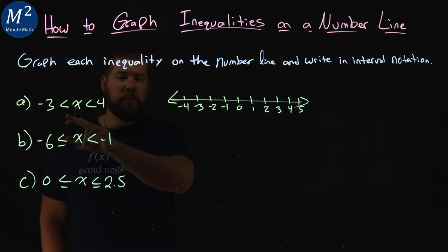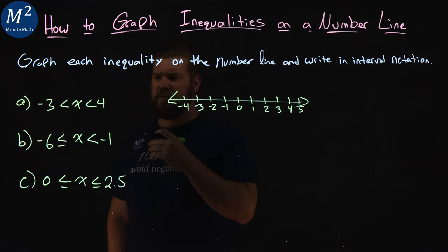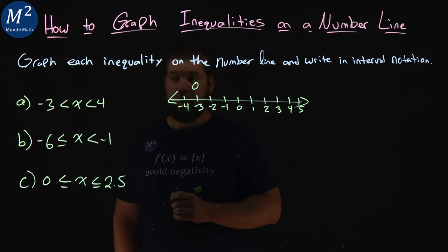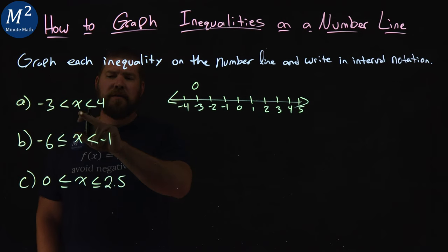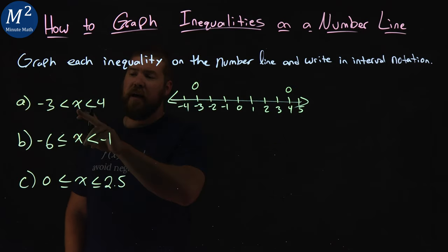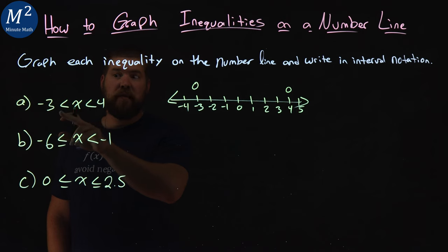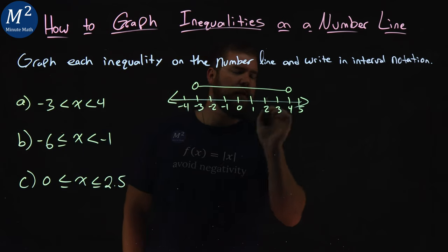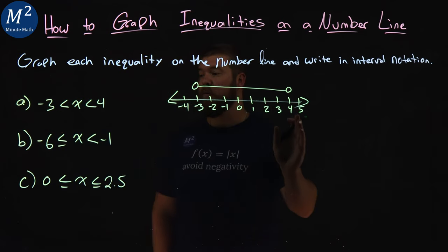They tell us that x is between these two values. Negative 3 is less than x. It's not equal to negative 3, it's just x is greater than negative 3, so we have an open circle right there. Then x is less than 4. Well, if x is less than 4, it's not equal to 4, open circle. Now x is between these two values, so fill that in right here. Between these two values is where x can be.